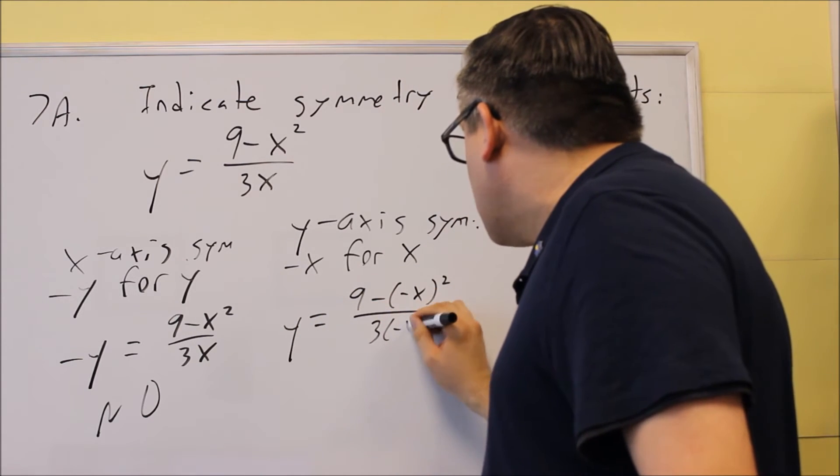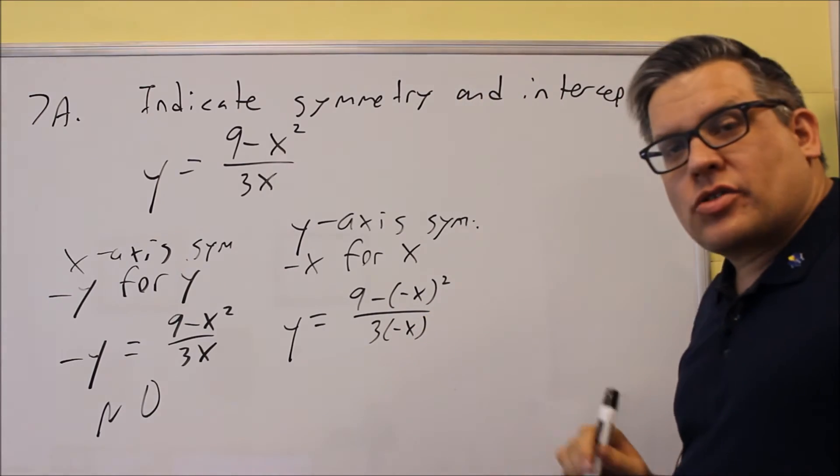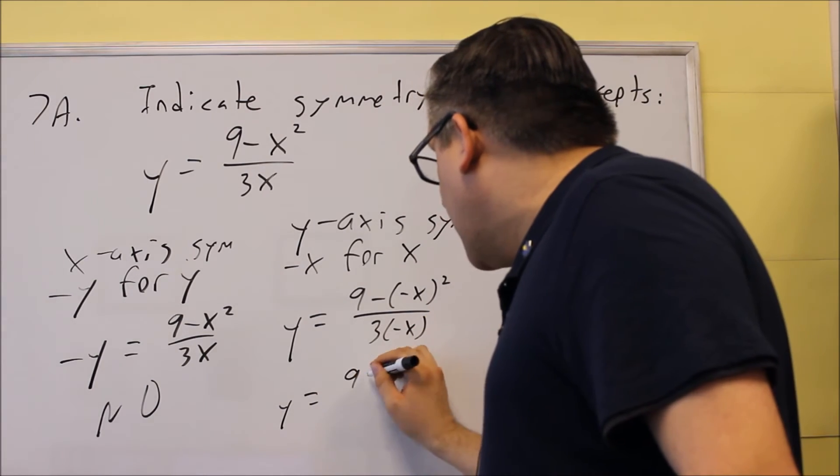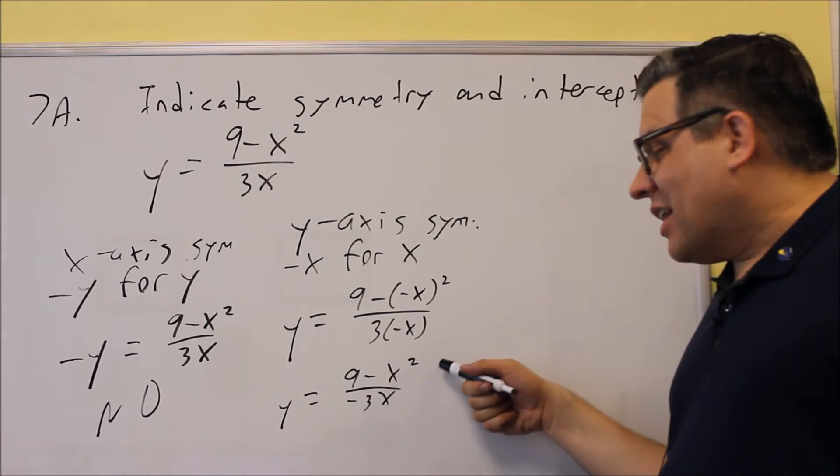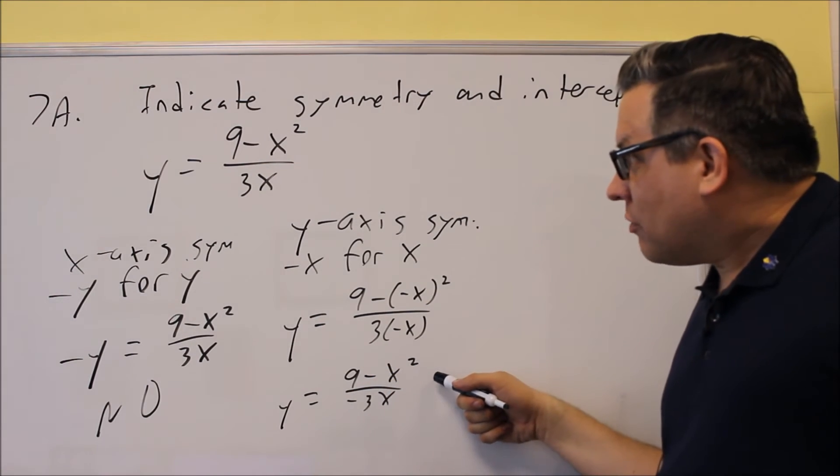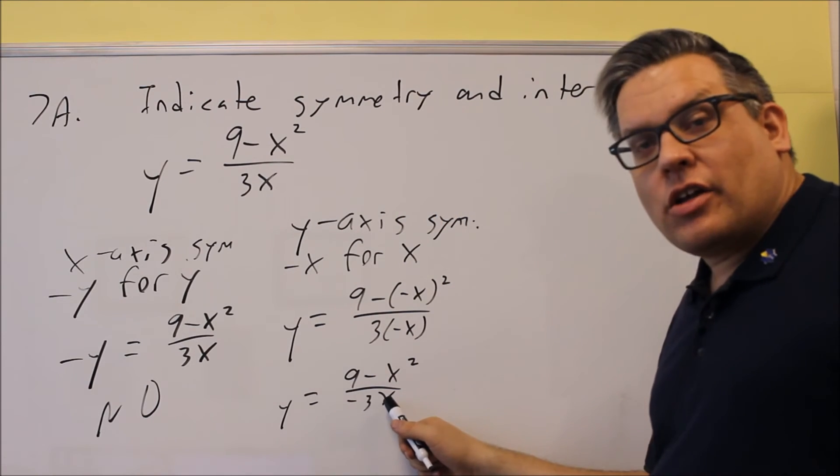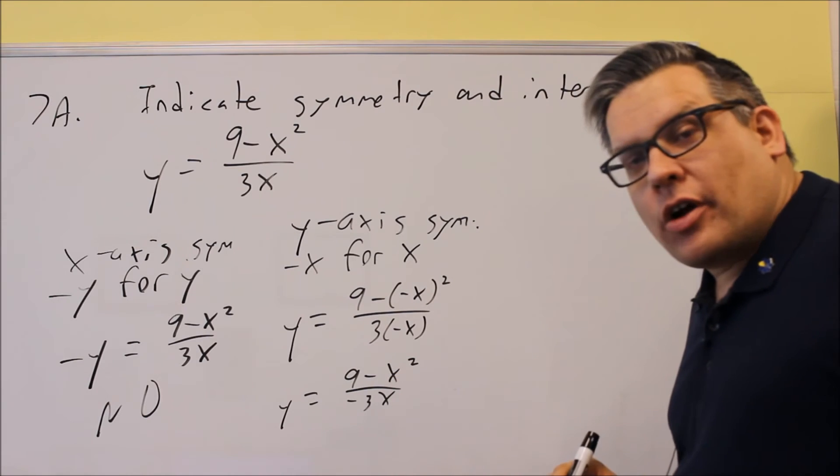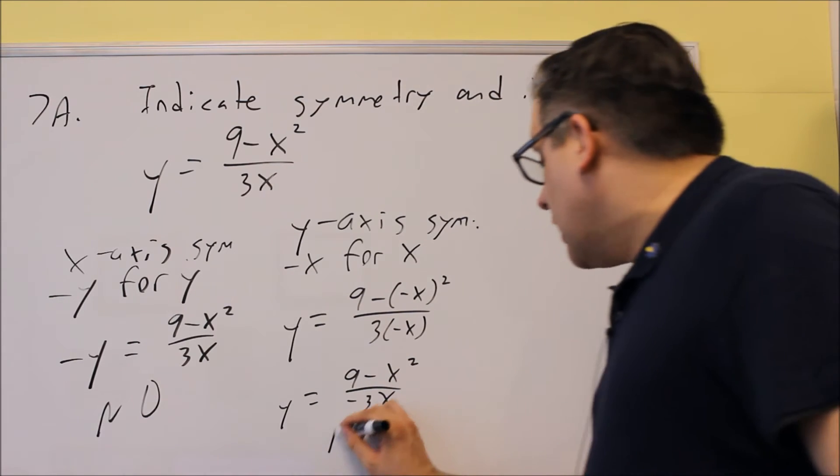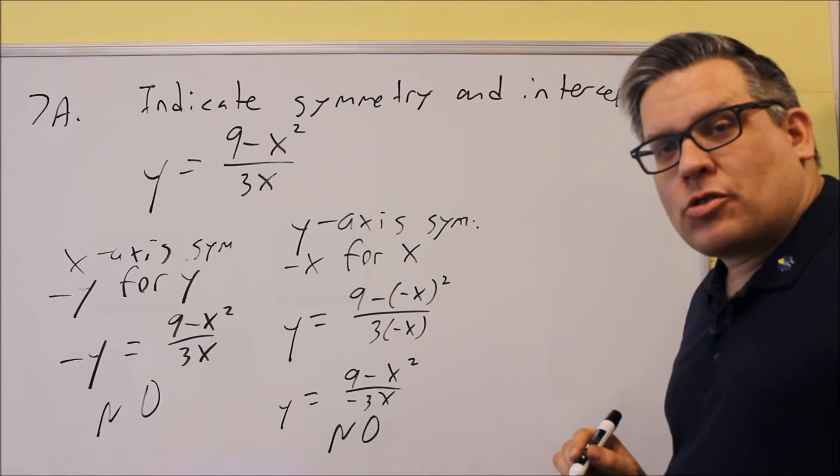We're going to simplify that, and when we do, we get (9 - x²)/(-3x). That's not the same as the original one either, because it has an extra negative on it, and if I try and multiply both sides by a negative, it's still going to appear there. And so this one, again, I'm going to put no for y-axis symmetry.